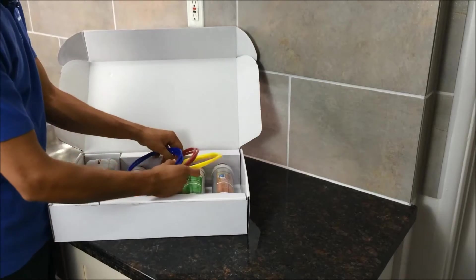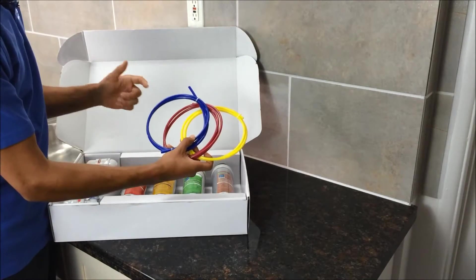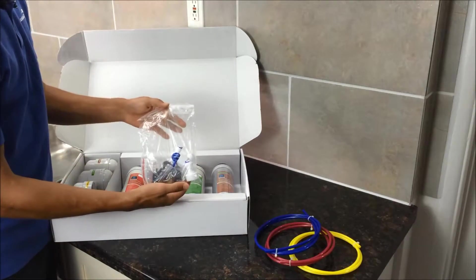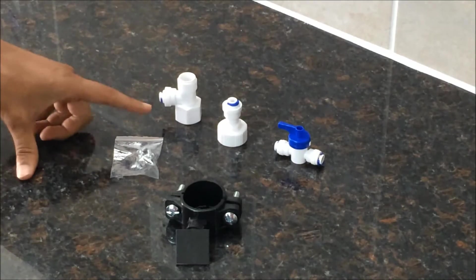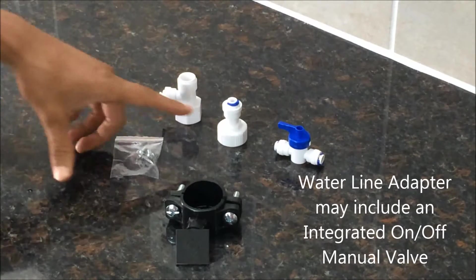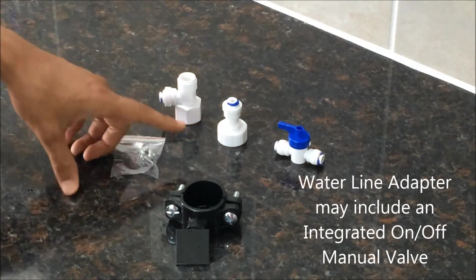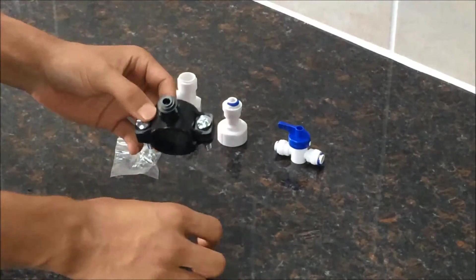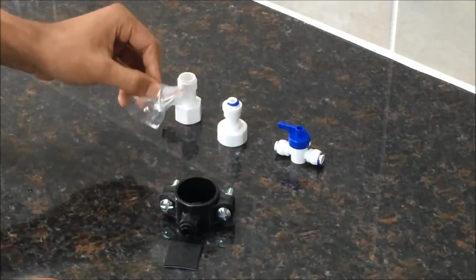Inside of the box there are three colors tubing: blue, red, and yellow in four-foot. There's this parts pack here. This parts pack includes an under sink waterline adapter, your hose bib connection, an on-off manual valve, your drain saddle with a gasket, and some mounting screws.